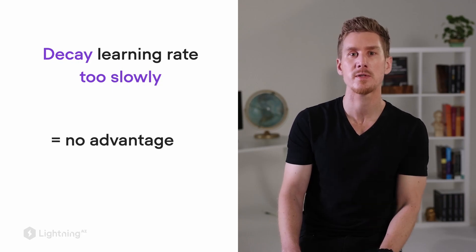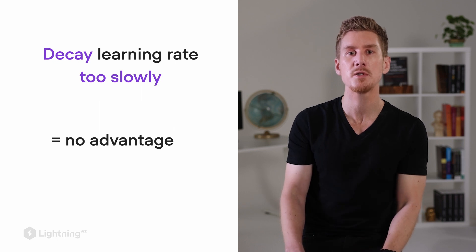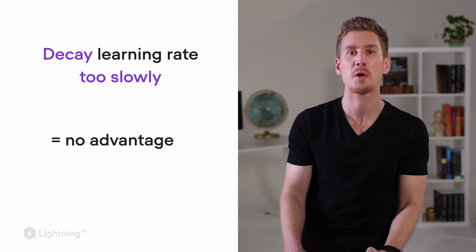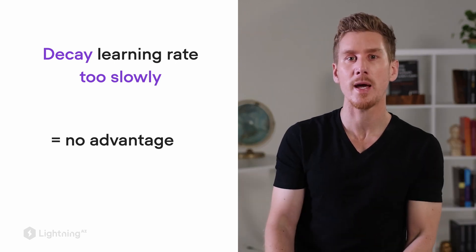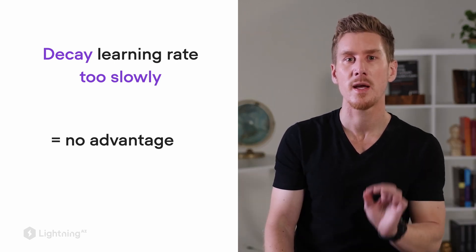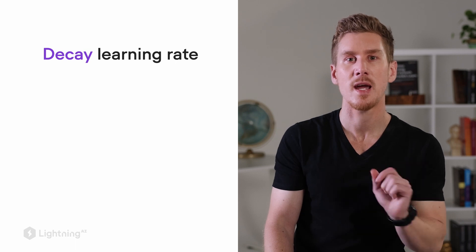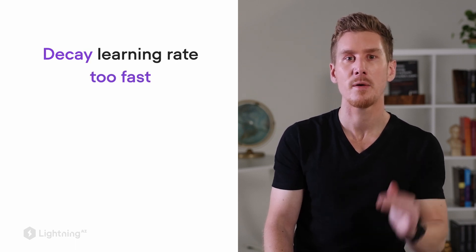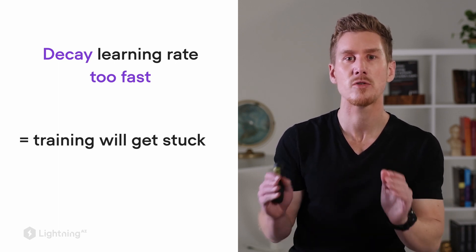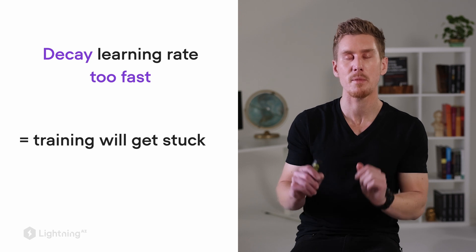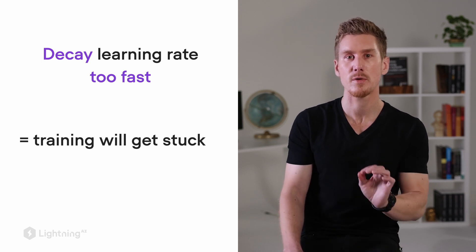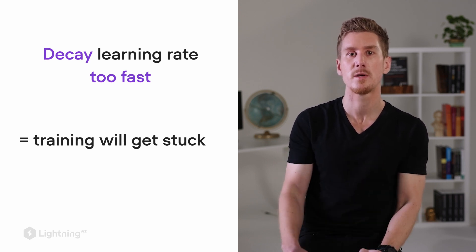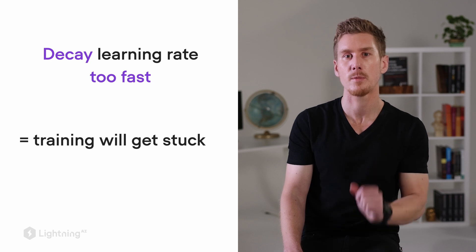If we decay the learning rate too slowly, we don't have any advantage, because a learning rate that is decayed too slowly is equal to having a constant learning rate. While that's not too bad, we simply don't get any advantage. A worse mistake is to decay the learning rate too fast or too quickly — we will have a learning rate that becomes too small too fast, and then the training will get stuck. When using learning rate schedulers, we have to be careful because there are additional tuning parameters involved to make it work well in practice.